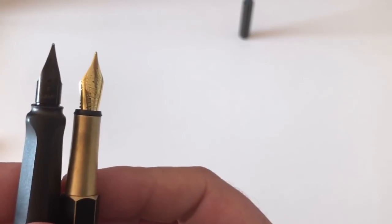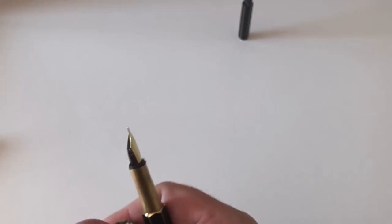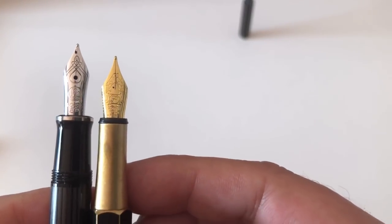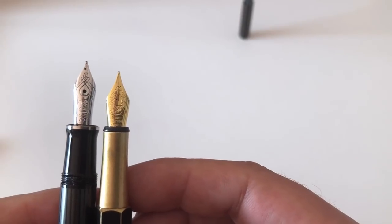Here's a Lamy Safari nib as a comparison. What else do I have? Yeah, maybe again the nib of the Pelikan M400 here. That's a little larger.